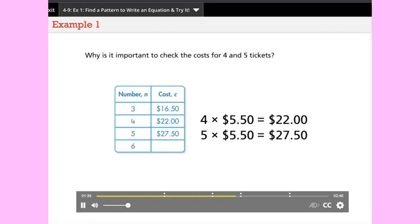Why is it important to check the costs for four and five tickets? It is important to check the costs for four and five tickets because you must make sure the rule works for all the related numbers in the table.